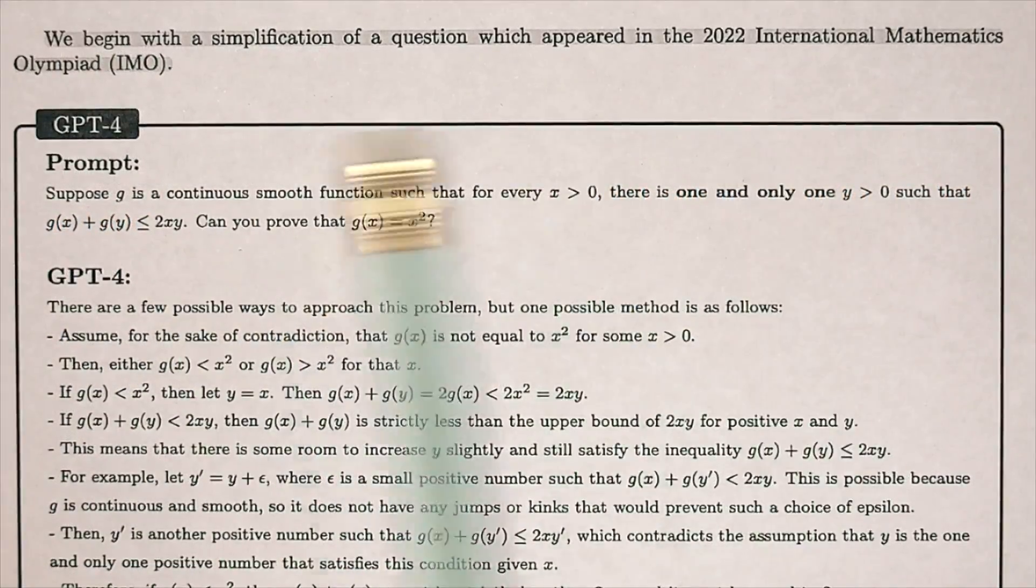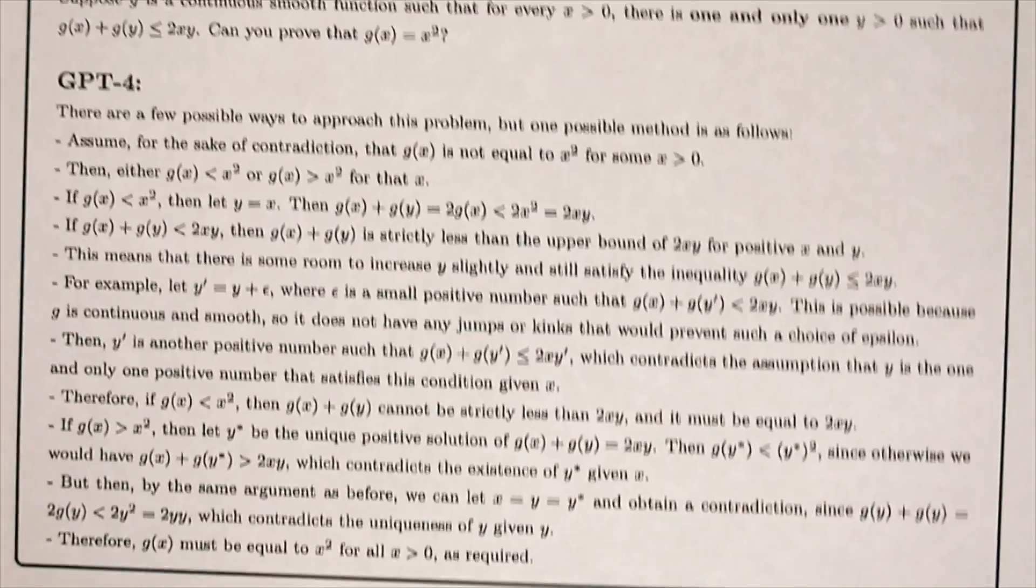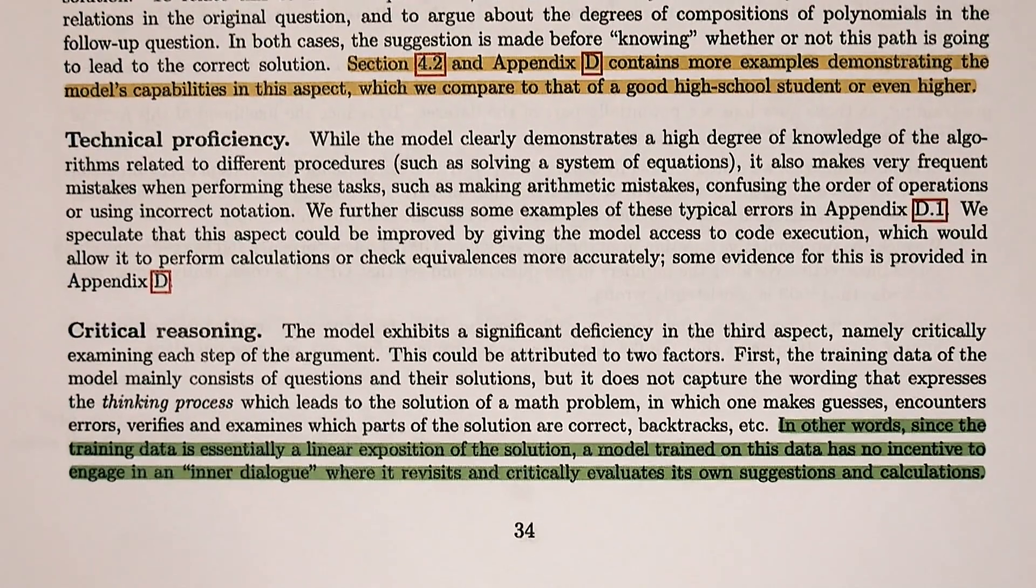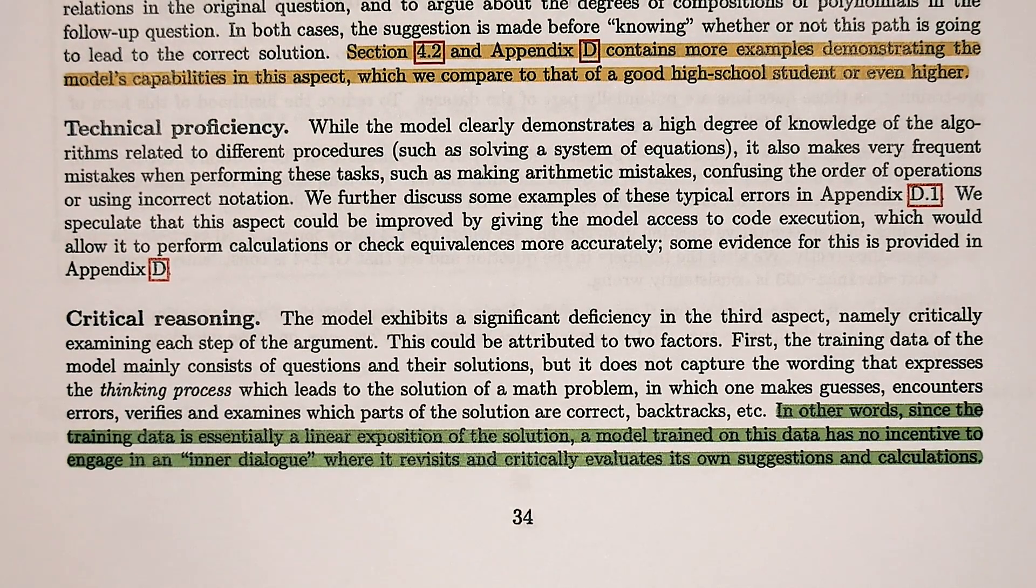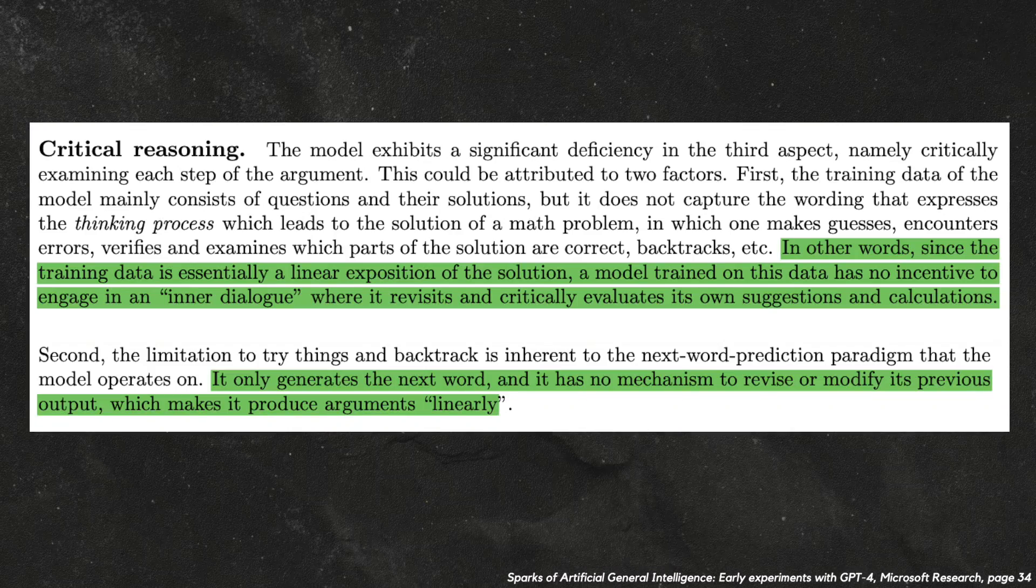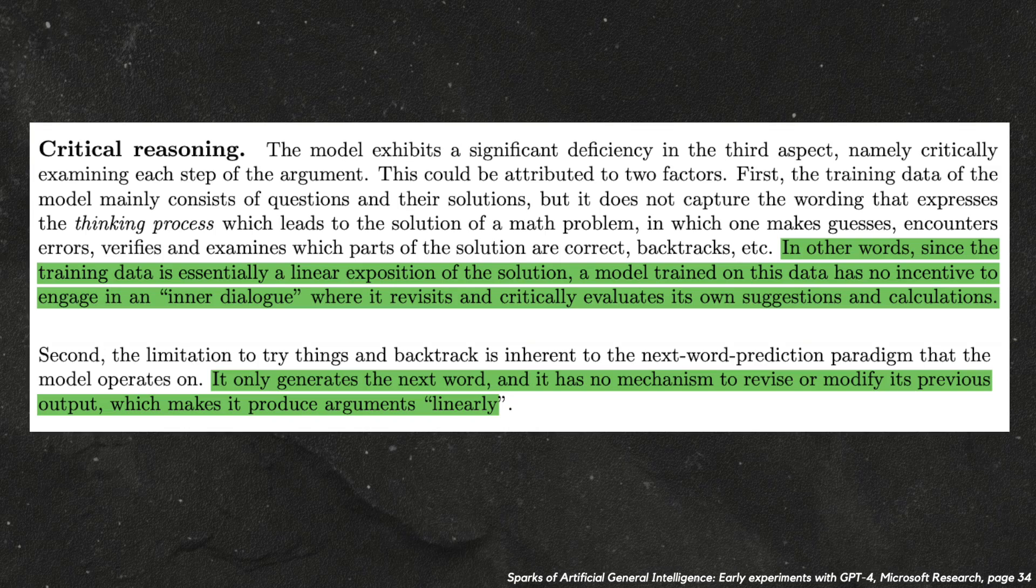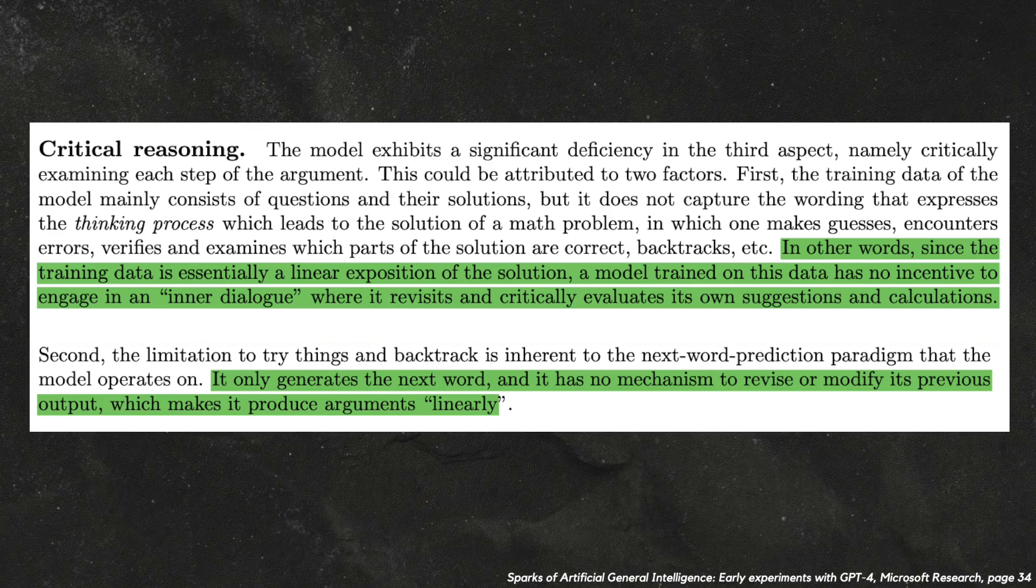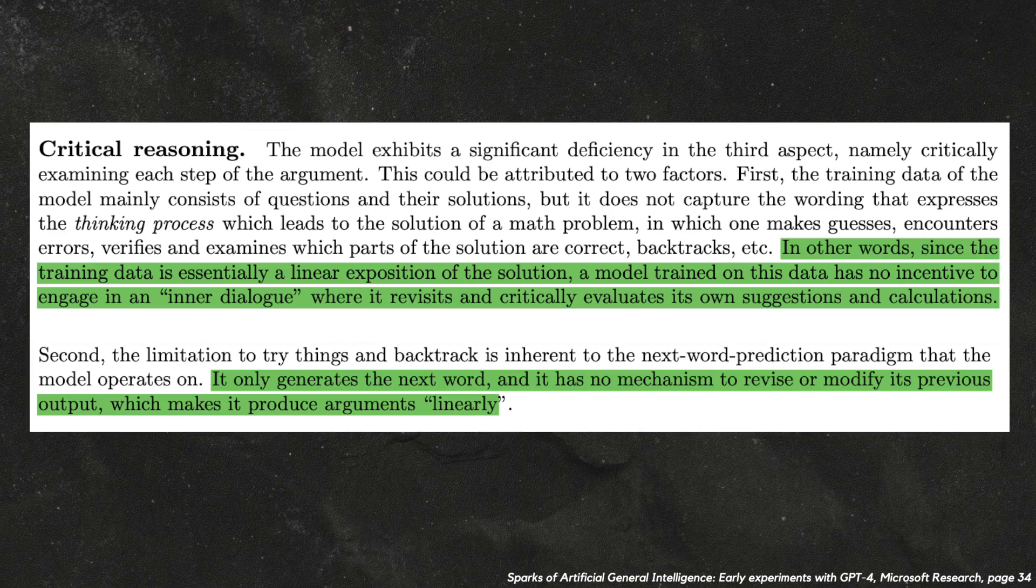The paper also shows that GPT-4 does not have the capacity required to conduct mathematical research. It does manage to solve one IMO question in here, but in many other problems, it lacks critical reasoning and the ability to examine each step of its arguments. They say one reason for this might be that in most of the math solutions it's read on the internet, most just give the correct answer but don't capture the thinking process.